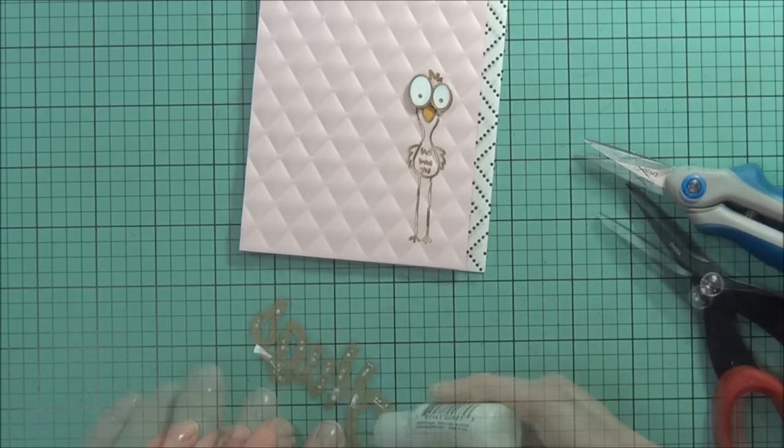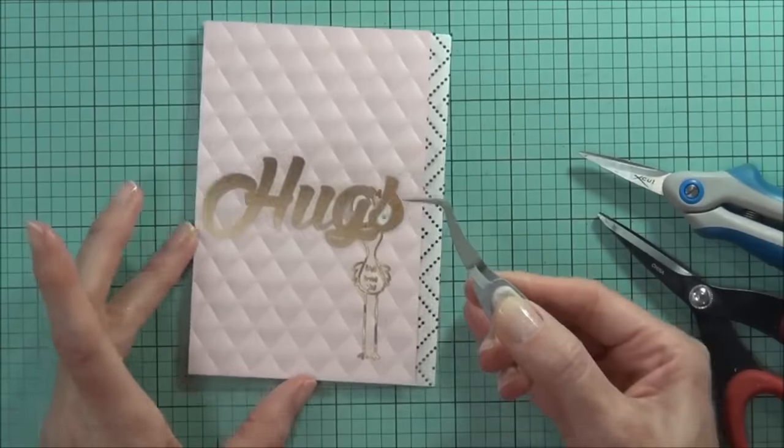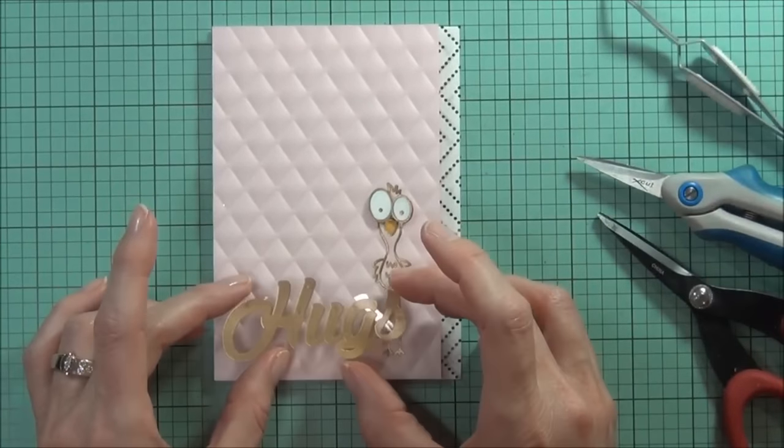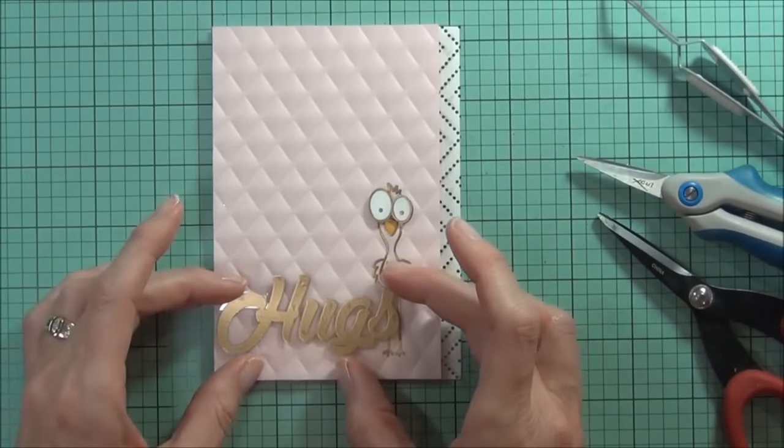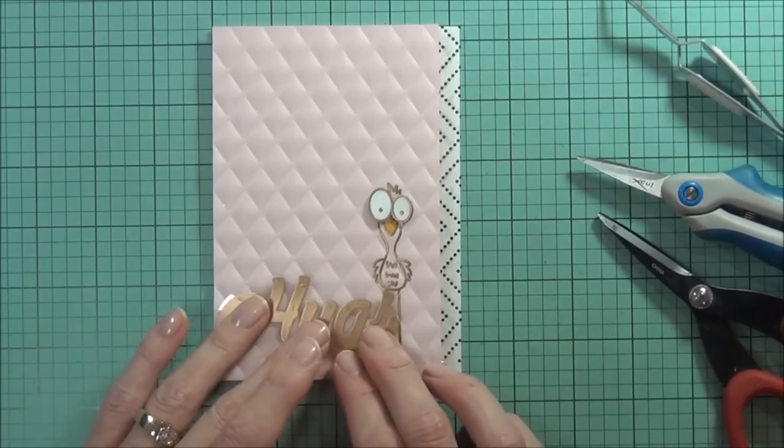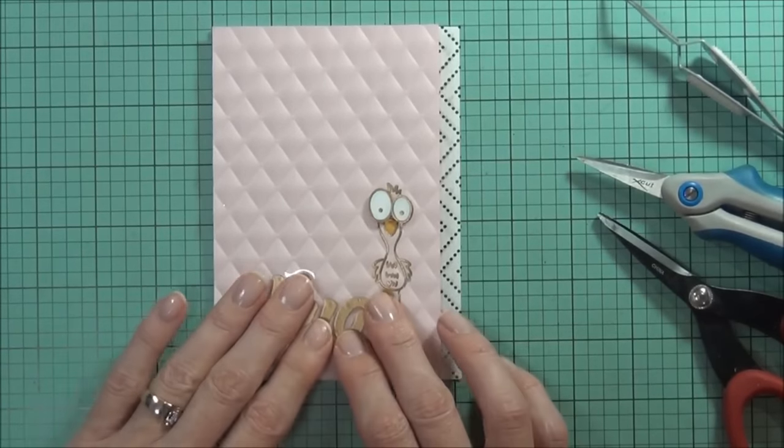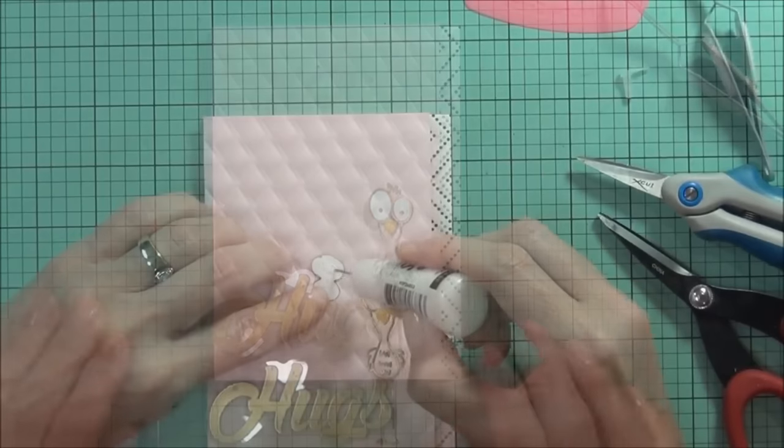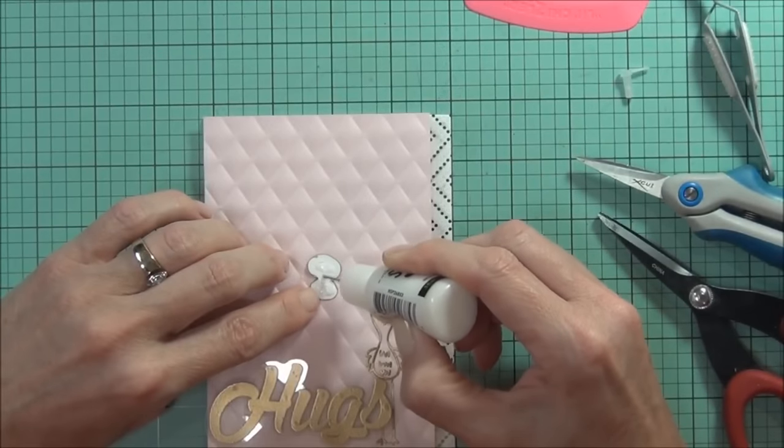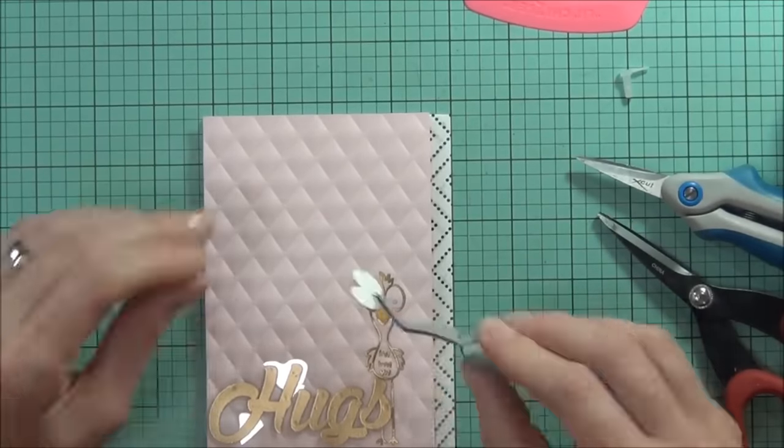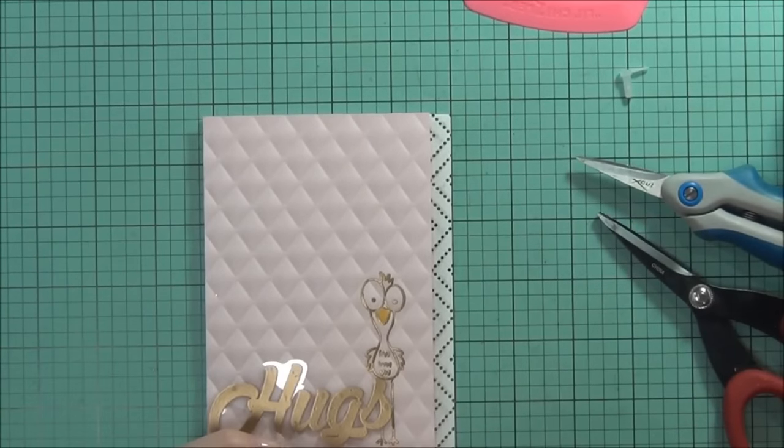And that way it is popped up, but I could have just actually added the multi-medium behind the embossed area and set it directly on the card front. I just wanted that bit of height. And I'm using the liquid glue to add the eyes of the bird as well.